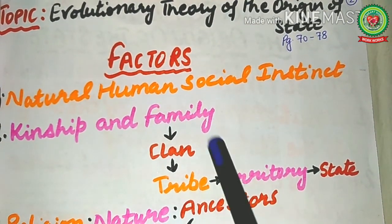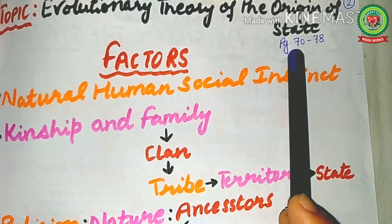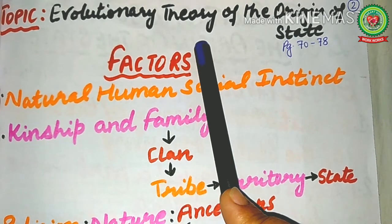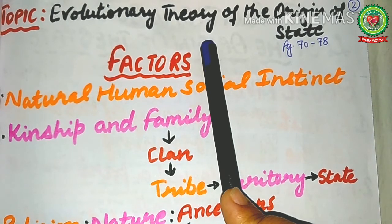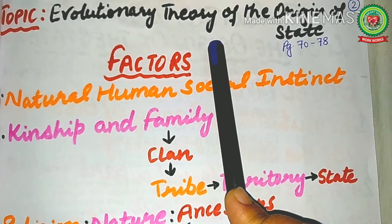Now I will discuss today's topic — the evolutionary theory of the origin of the state, from page 70 to 78. This theory advocates that the state has originated through a natural process of historical evolution. It had its birth in such a natural way that people came to realize its presence only after they became its members or citizens. We cannot fix an exact historical date when the state had its origin.